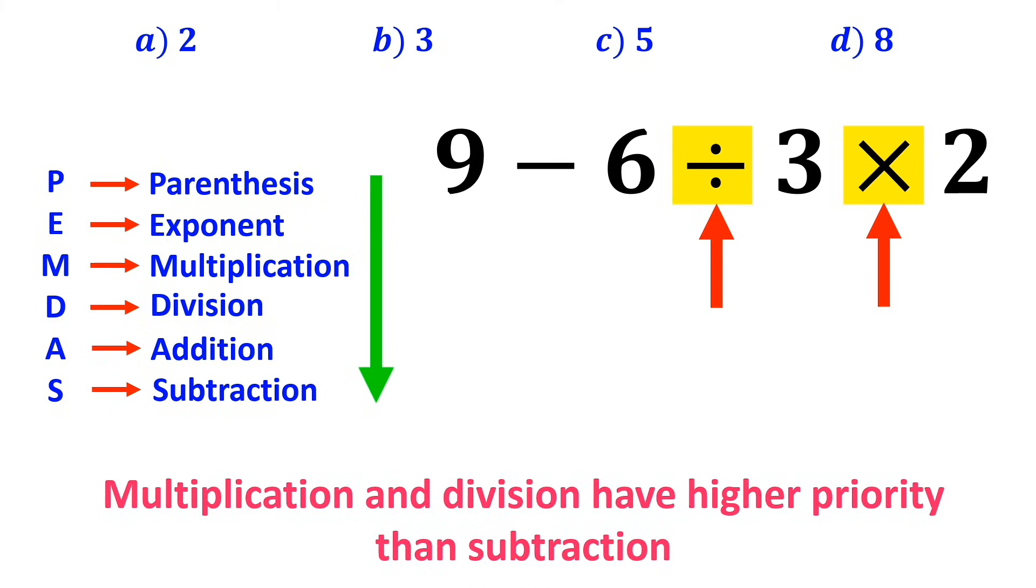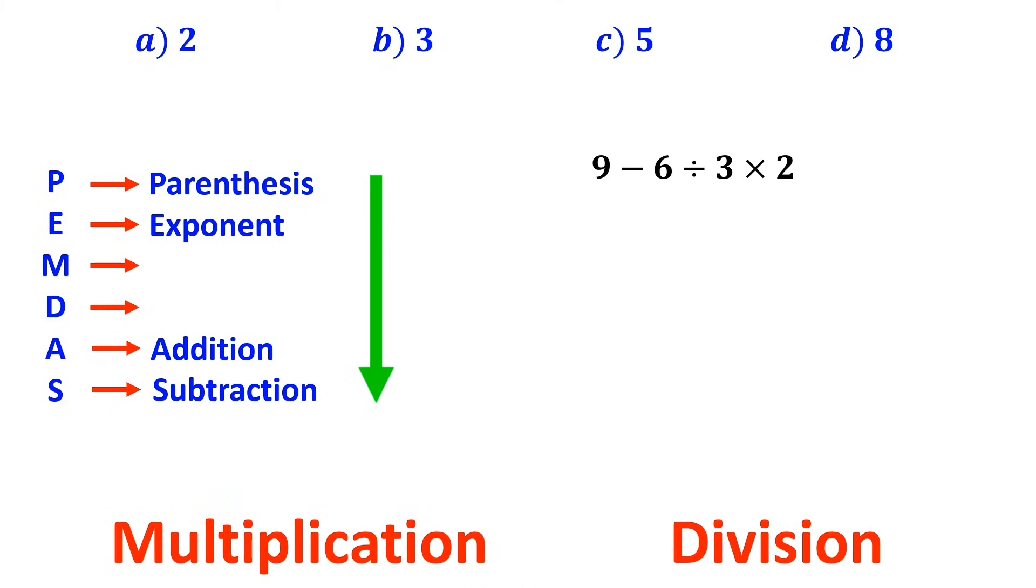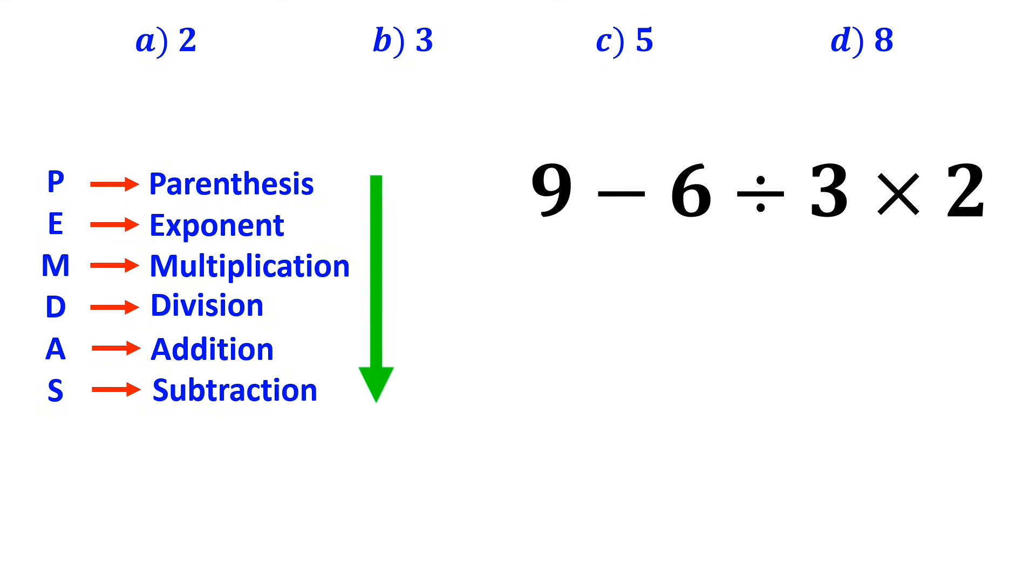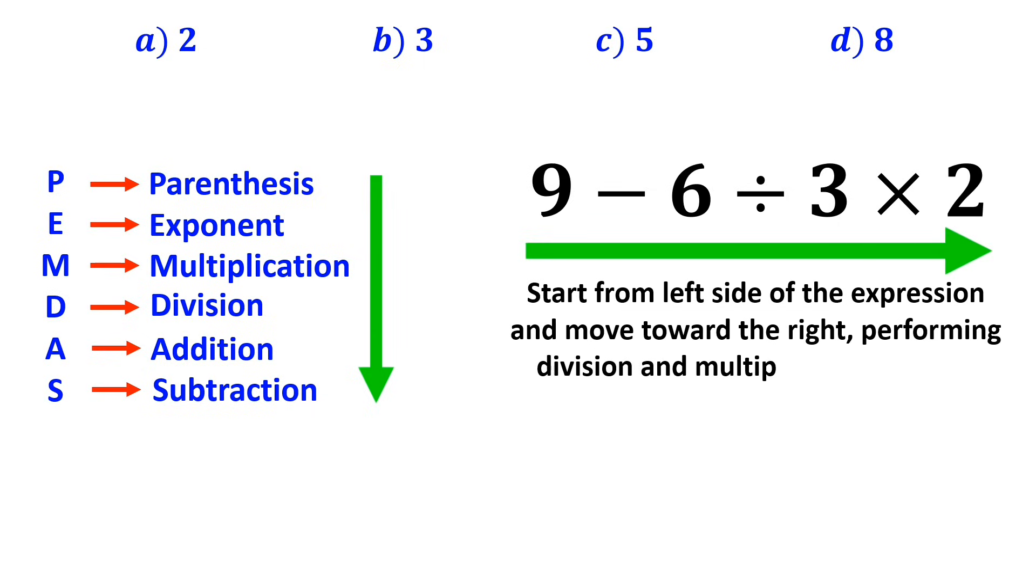However, it's very important to note that in the PEMDAS rule, multiplication and division have exactly the same level of priority. In this situation, the best thing to do is to start from the left side of the expression and move toward the right, performing division and multiplication in order.